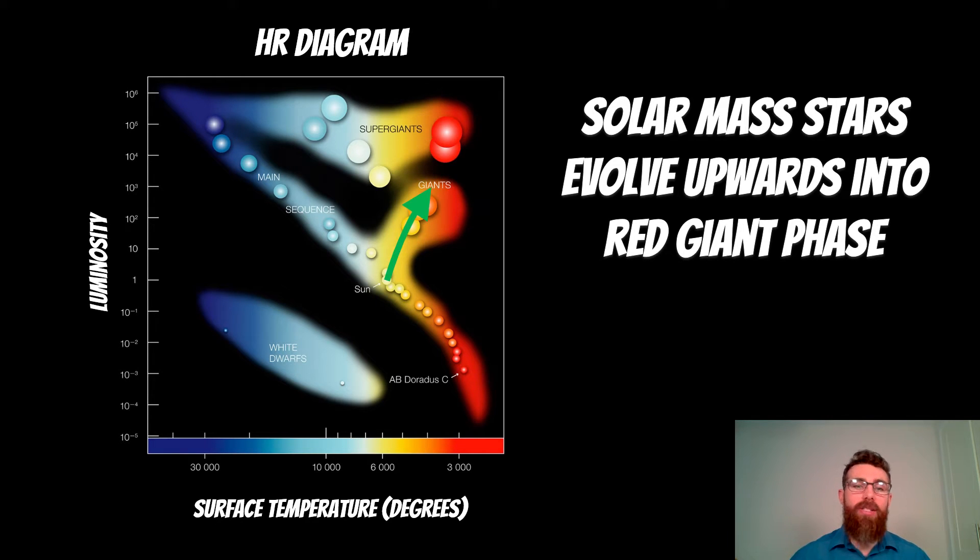So for solar mass stars, so stars like the Sun on the main sequence which is the diagonal part on the HR diagram, they will move up and to the right when they go into the red giant phase.